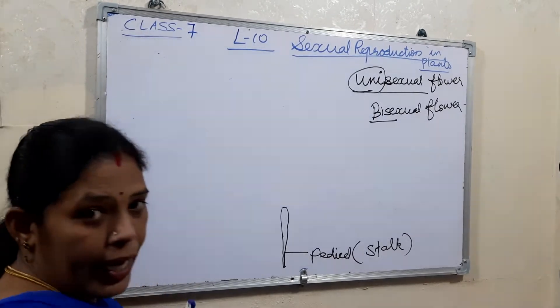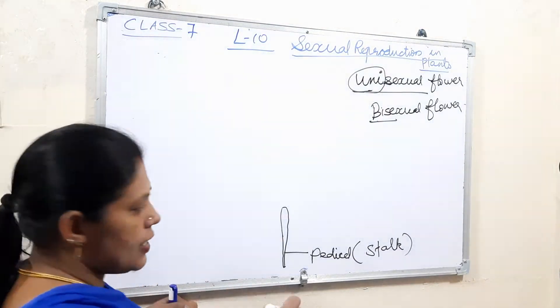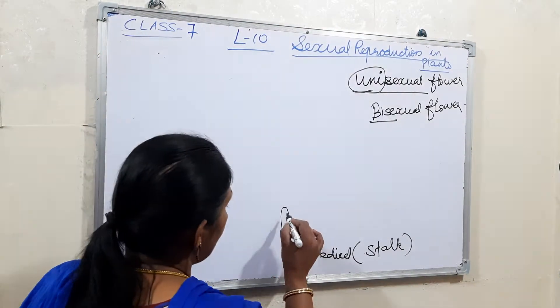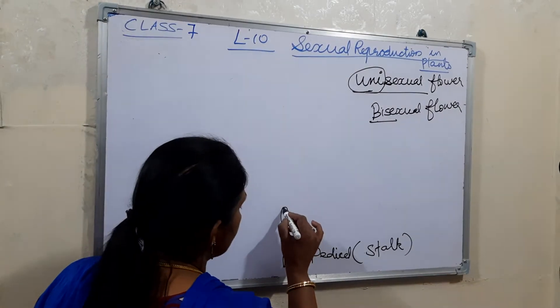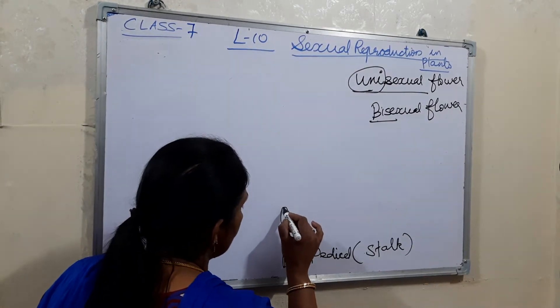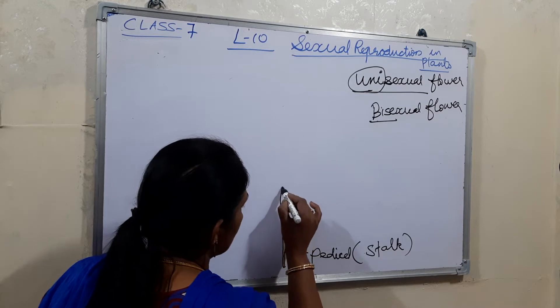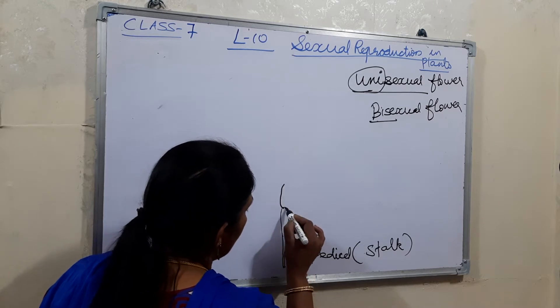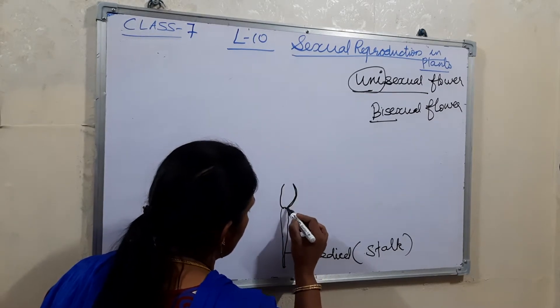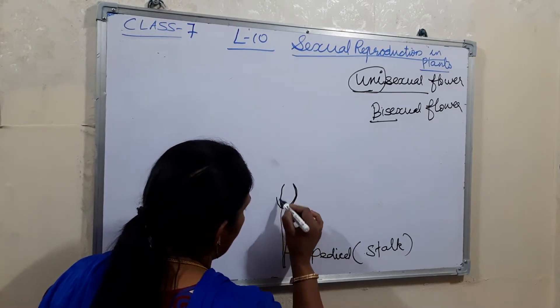The pedicel is attached to the stem. Here you can see the swollen portion — that is the thalamus.